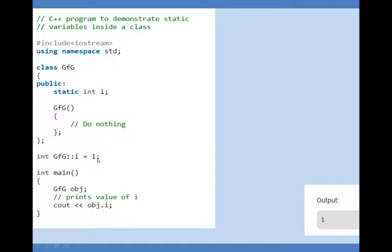In main function, I wish to print the value of the static variable. The object is created by this line: gfg obj, and obj dot i will print the value that is one. It will be common for all the objects which will be created.